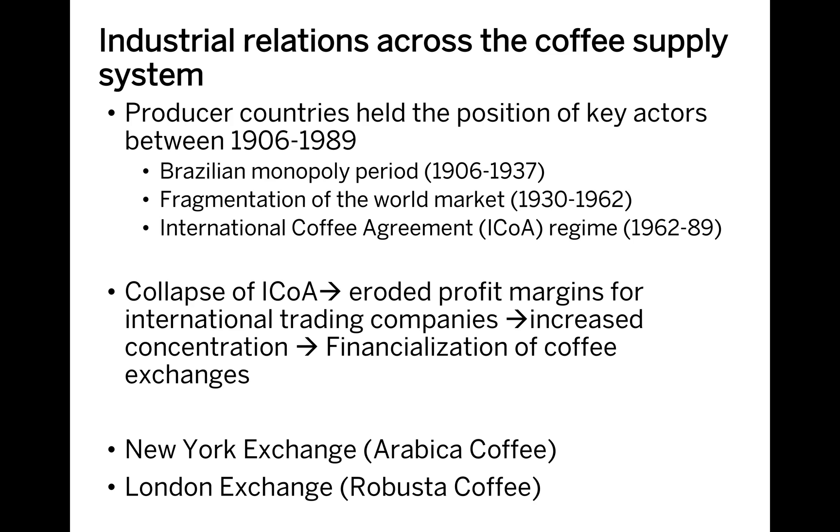These are some of the chapters in your book. It talks about some of the supplier systems and the key actors and institutions that can also impact this commodity chain. This is just a summary from our readings - the New York exchange and London exchange also control how this coffee is traded in the international market.